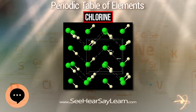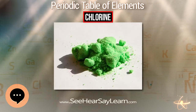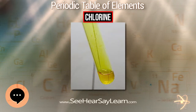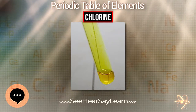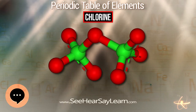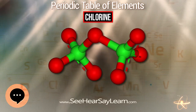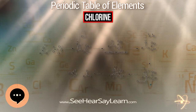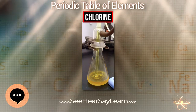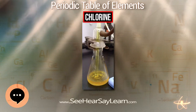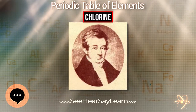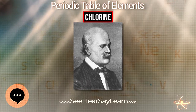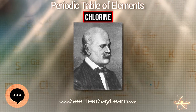The most common compound of chlorine, sodium chloride, has been known since ancient times. Around 1630, chlorine gas was first synthesized in a chemical reaction but not recognized as a fundamentally important substance. Carl Wilhelm Scheele wrote a description of chlorine gas in 1774, supposing it to be an oxide of a new element. In 1809, chemists suggested that the gas might be a pure element, and this was confirmed by Sir Humphrey Davy in 1810.